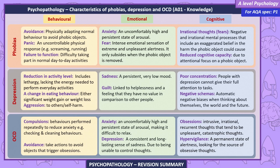OCD — Behavioral: Compulsions, behaviors performed repeatedly to reduce anxiety, for example checking and cleaning behaviors; Avoidance, taking actions to avoid objects that trigger obsessions. Emotional: Anxiety, an uncomfortably high and persistent state of arousal making it difficult to relax; Depression, a consistent and long-lasting sense of sadness due to being unable to control thoughts. Cognitive: Obsessions, intrusive, irrational, reoccurring thoughts that tend to be unpleasant; Catastrophic thoughts; Hypervigilance, a permanent state of alertness looking for the source of obsessive thoughts.